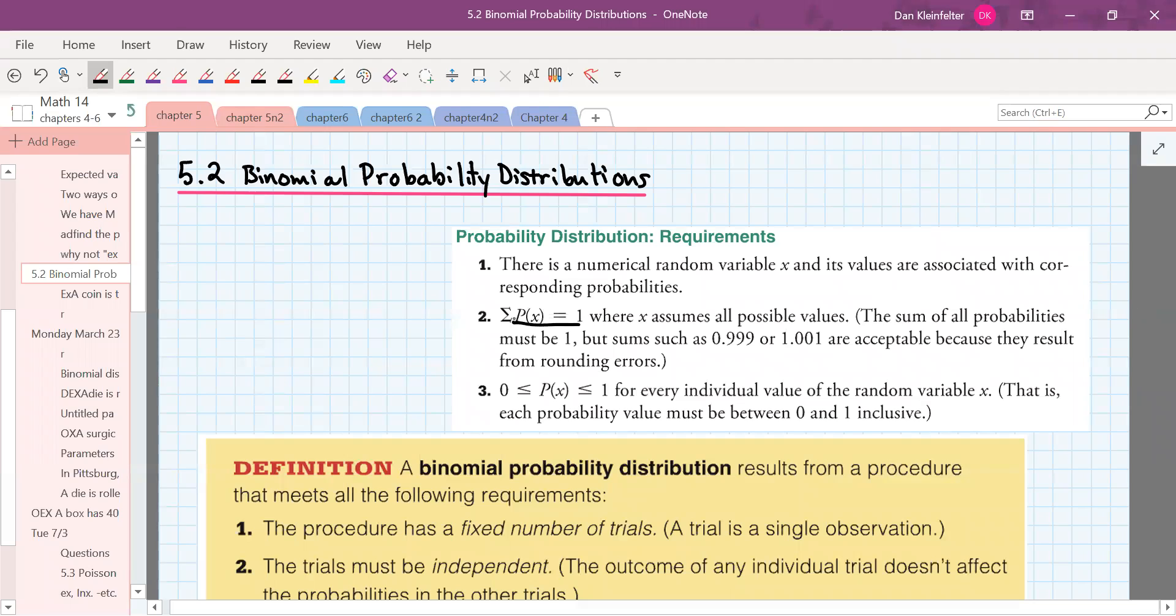The sum of the probabilities had to equal 1, and each of the probabilities has to be between 0 and 1.